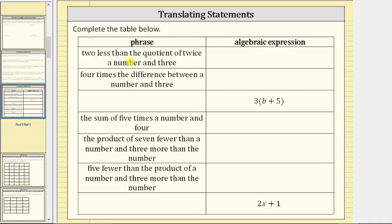The phrase is 'two less than the quotient of twice a number and three.' Because the phrase reads 'two less than the quotient,' let's first find the quotient. Remember, quotient means division. For the quotient of twice a number and three, let's use the variable n for the unknown number.